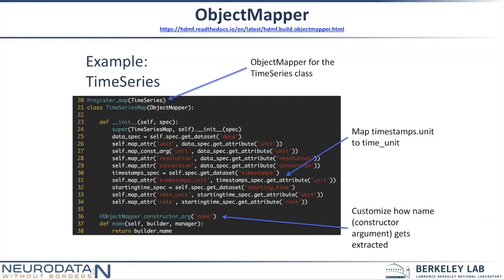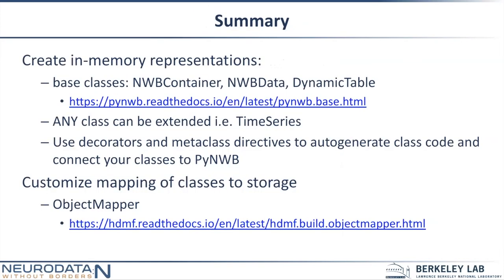In summary, there are two main things. First, you can create different in-memory representations — the base classes are NWBContainer, NWBData, and DynamicTable, and you can find more base classes in the documentation. You can extend any class, including TimeSeries, which is probably what most of you will start with. You have decorators and metaclass directives to auto-generate code and register with the PyNWB system. Second, if you want to modify how data gets stored, you can customize the mapping of classes to storage using the object mapper.